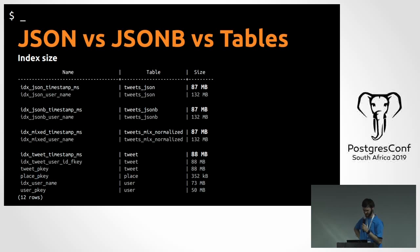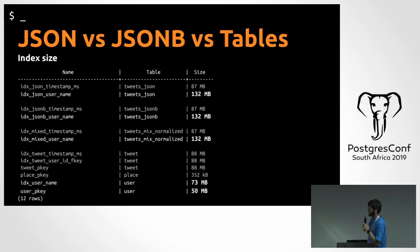Here we have our index sizes — pretty much all the same, because it's just Btree indexing the same thing all the time. I don't know why the tables timestamp milliseconds was one megabyte bigger, it's a bit strange. Here we have the user names — all basically the same again. And then at the bottom we have two indexes for the user name and also the user ID, to speed up the table joins.